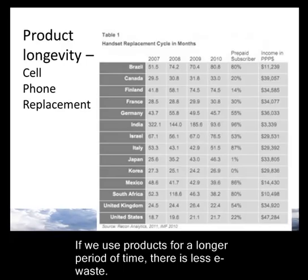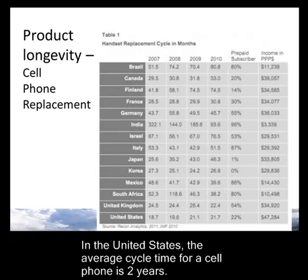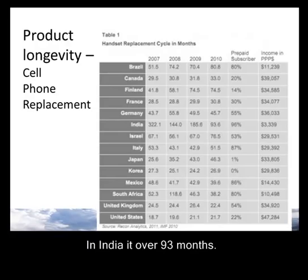One strategy for greener technology is to design products that last longer. If they last longer, then there isn't so much e-waste being put into landfills. This chart shows the average cell phone replacement time for different countries. In 2010, the average time to replace a cell phone was 21.7 months in the United States — almost two years, possibly tied to when your contract runs out. In other countries it can be much longer. In Brazil, it's over 80 months. Can you imagine owning the same phone for almost seven years?